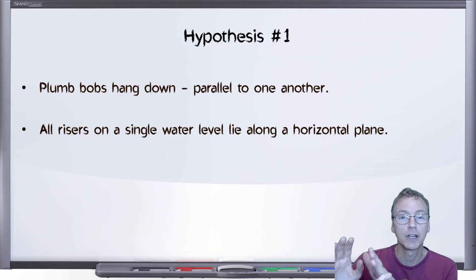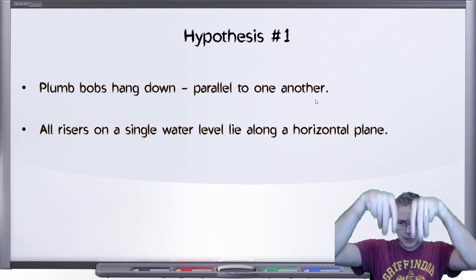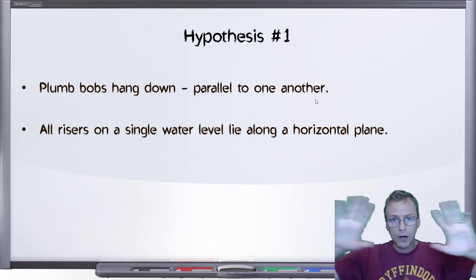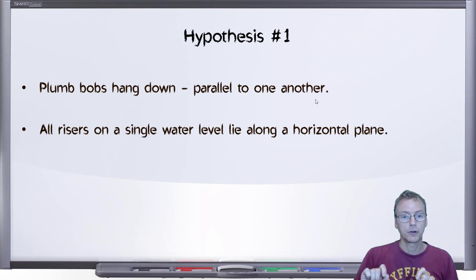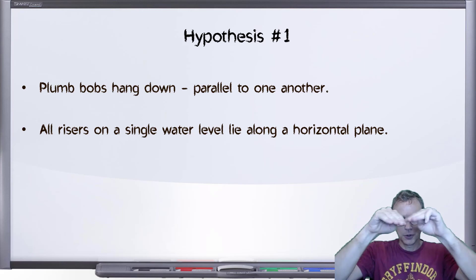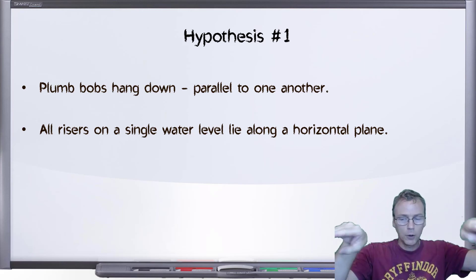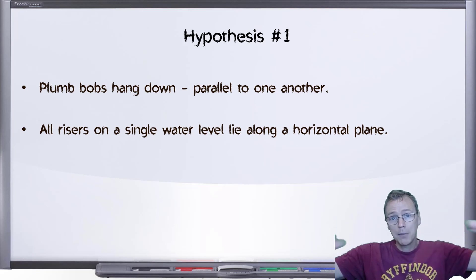Let's start with a very simple summary of what the two hypotheses are. Hypothesis number one: plumb bobs hang down parallel to one another. All plumb bobs hang down, and no matter where they are in the world, they should all be parallel. In this hypothesis, we further would say, all risers on a single water level lie along a horizontal plane.